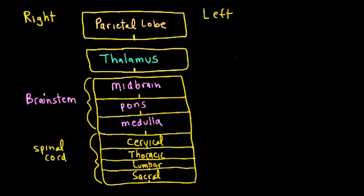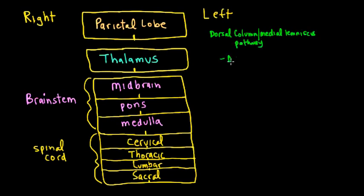The first pathway we're going to look at is the pathway that carries information through the dorsal columns of the spinal cord and the medial lemniscus of the brain stem. This pathway — the dorsal column medial lemniscus pathway — is going to be transmitting discriminative touch, sometimes called fine touch information. It's also going to be carrying proprioception information, or sometimes called joint position sense, and collectively this is carried through the dorsal column medial lemniscus pathway.